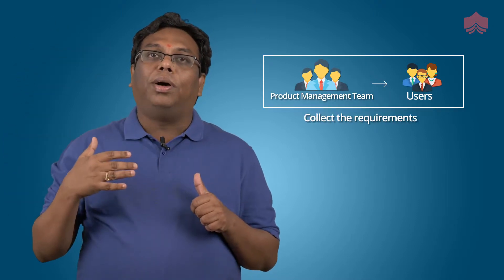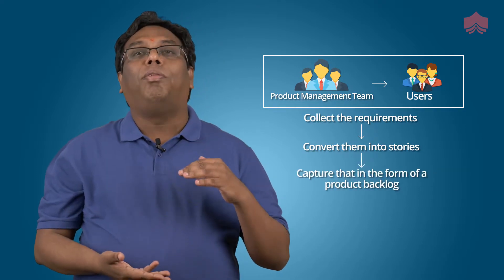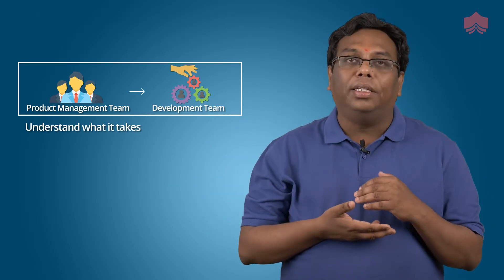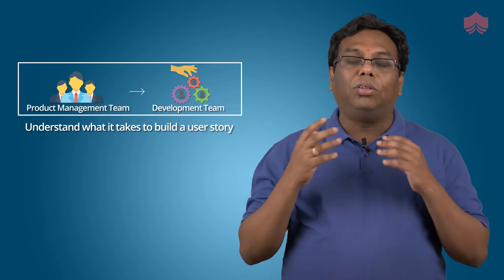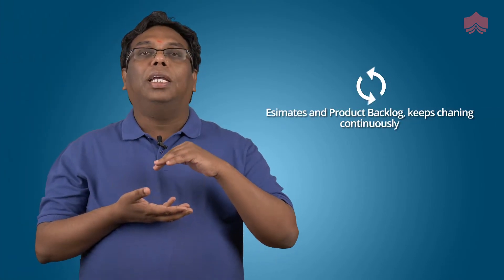The product backlog also has to be estimated by the development team members. The product management team has to ensure that they go talk to the users, collect the requirements, convert them into stories, capture that in the form of a product backlog, and also talk with the development team to understand what it takes to build a particular user story. These are nothing but estimates.